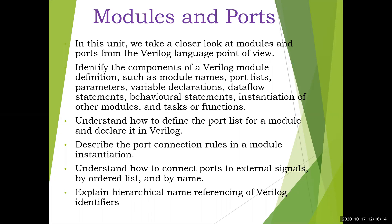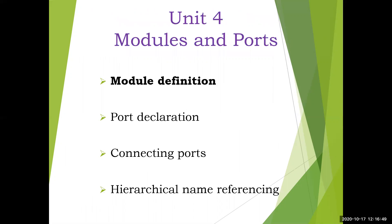We'll identify the components of a Verilog module like definitions such as module names, port list, parameters, variable declarations, data flow statements, behavioral statements, instantiation of other modules, and tasks or functions. We'll understand how to define the port list for a module and declare it in Verilog, describe the port connection rules in a module instantiation, and understand how to connect ports to external signals by two methods: ordered list and by name. We'll also explain hierarchical name referencing of Verilog identifiers. Basically four topics we are going to cover: module definition, port declaration, connecting ports, and hierarchical name referencing.